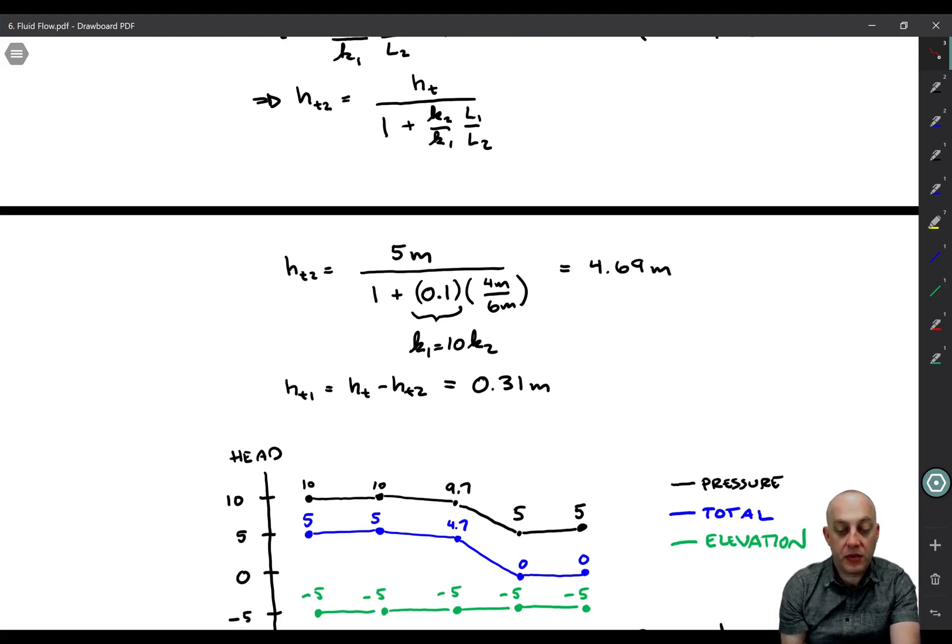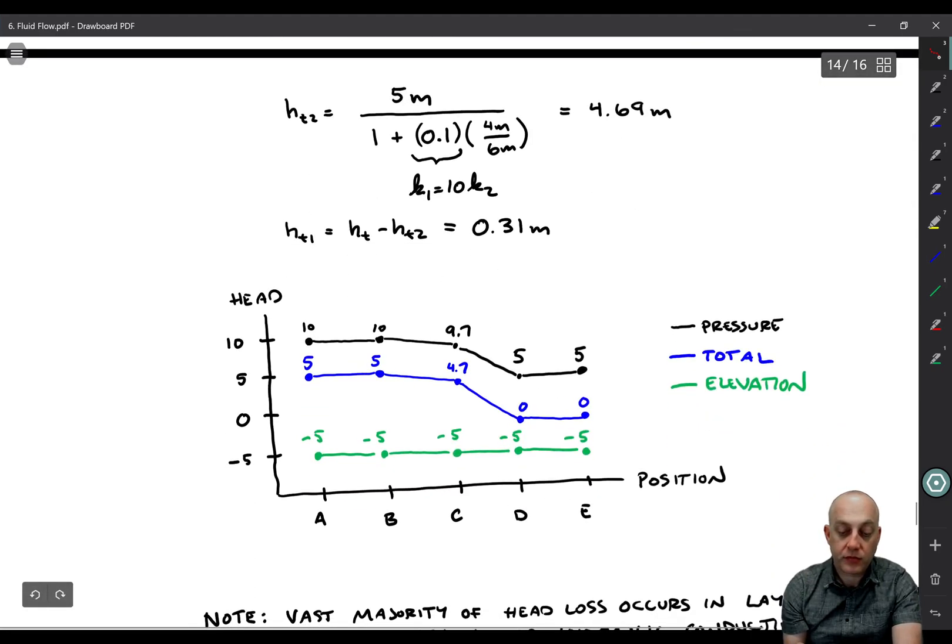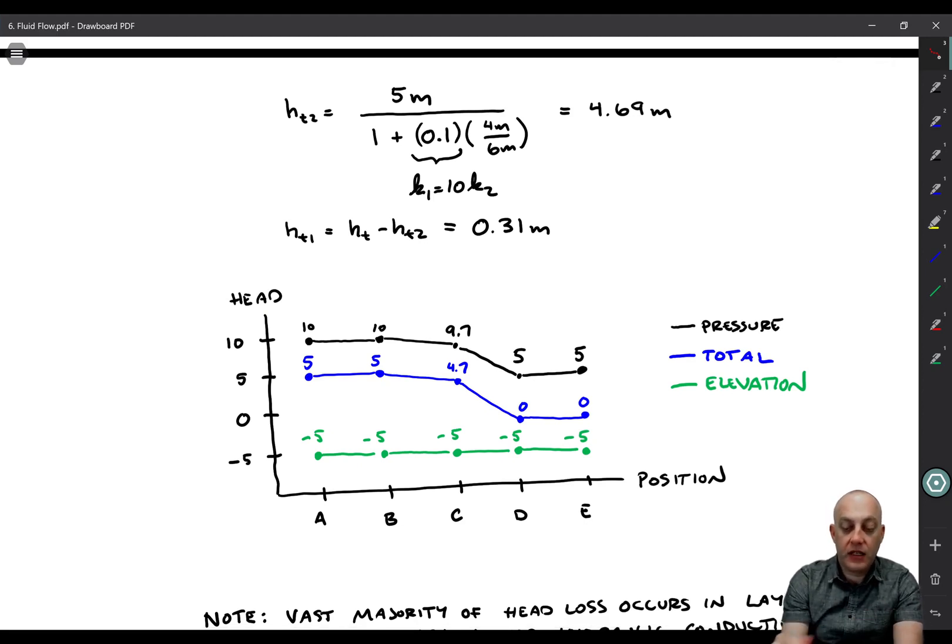HL1 plus HL2 is equal to 5 meters, which is the total head loss. Then we can plot these variables versus position horizontally. So here is head, either total head, elevation head, or pressure head, and position, and we have points A, B, C, D, and E on the x-axis.